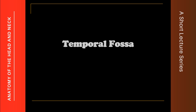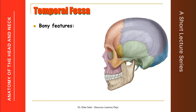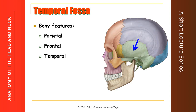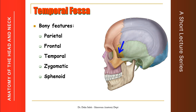The temporal fossa is a fossa that lies on the side of the skull. The bones forming it are the parietal bone, the frontal bone, the temporal bone, and the zygomatic bone. In between them lies the greater wing of sphenoid. The frontal, parietal, temporal, and sphenoid are separated by an H-shaped suture in an area called the pterion.